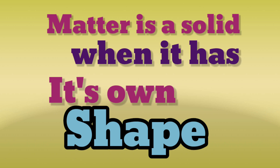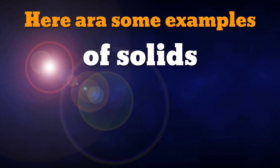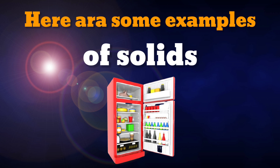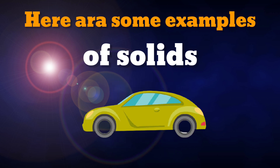Let me show you some examples. Here are some examples of solids. Coat — coat is a solid because it has its own shape. Next, refrigerator — refrigerator is also a solid because it has its own shape.